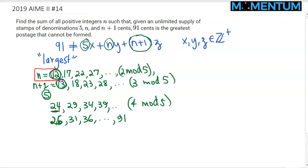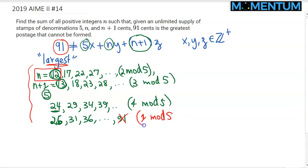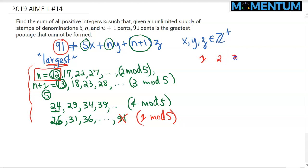There are two constraints: I want 91 not to be hit, and it must be the largest one not hit. I need to be more organized. The key idea is to put all positive integers into buckets by residue mod 5 — that is, 1 mod 5, 2 mod 5, 3 mod 5, and so on. Instead of organizing numbers in a line, organize them in a table with 5 columns.